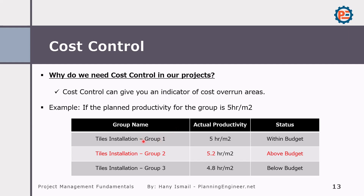Group one is within budget because its actual productivity matches the planned productivity. Group two is above budget — they are spending 5.2 hours per square meter while they should spend only five. You might think the difference is small, but imagine doing thousands of tile installations — you will lose thousands of hours. Group three is performing better than planned productivity, so it is below budget.